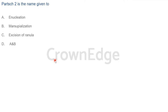Partsch 1 and Partsch 2 are different procedures. The answer is D is not correct. Enucleation and marsupialization together are not Partsch 1 or Partsch 2. These questions are straightforward but the options are confusing. The answer to 'Partsch 2' is A — enucleation.